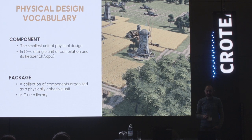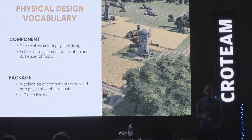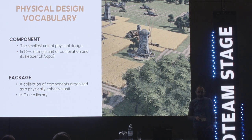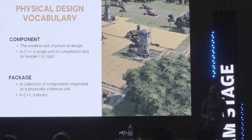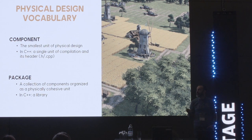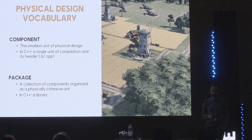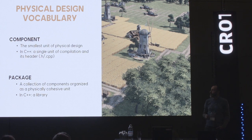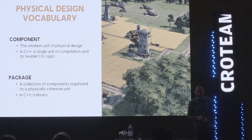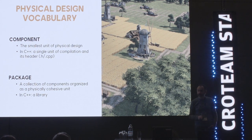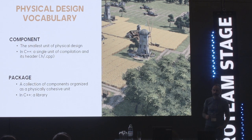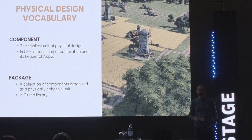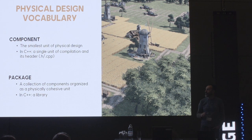To finish this short introduction to physical design, here is some vocabulary. A component is defined as the smallest unit of physical design, and in C++ it's represented by a single unit of compilation with its header — so a cpp file plus header. A package is a collection of components organized as a physically cohesive unit, and in C++ we talk about libraries. If you are interested to know more, I encourage you to read "Large-Scale C++ Software Design" from John Lakos. You will know more than you ever wanted to know about physical design.